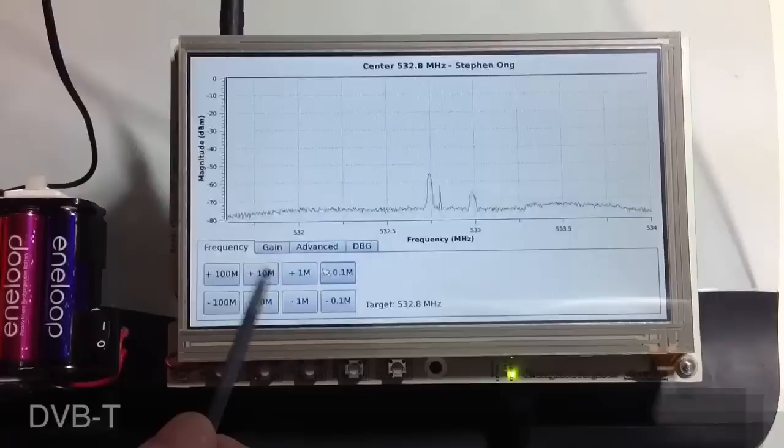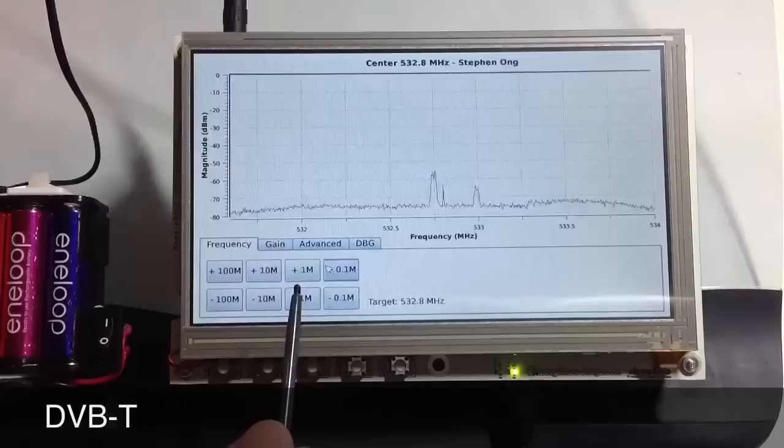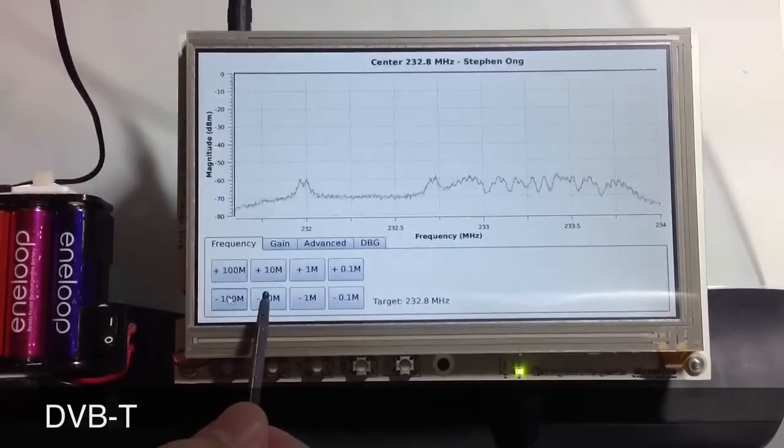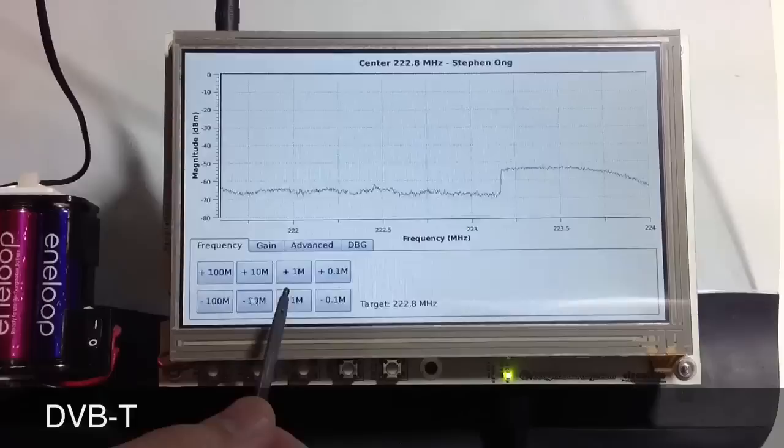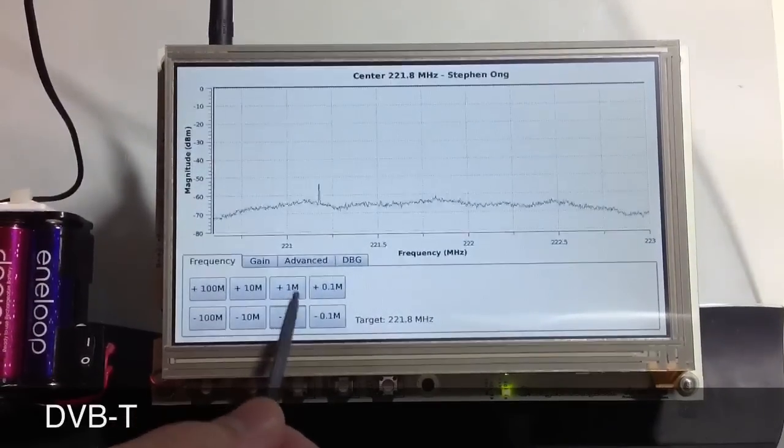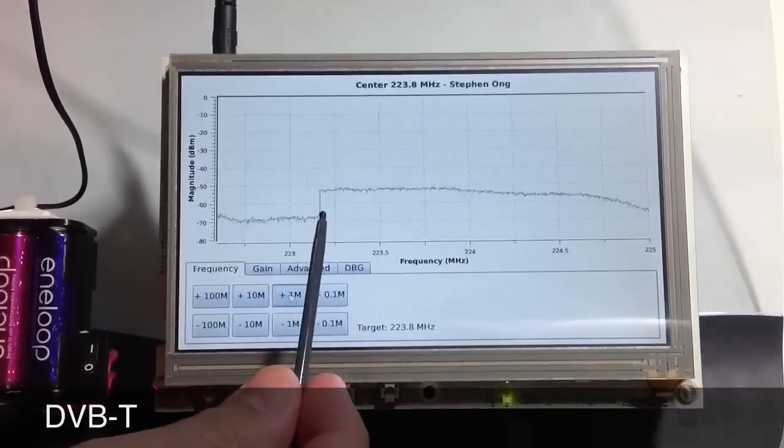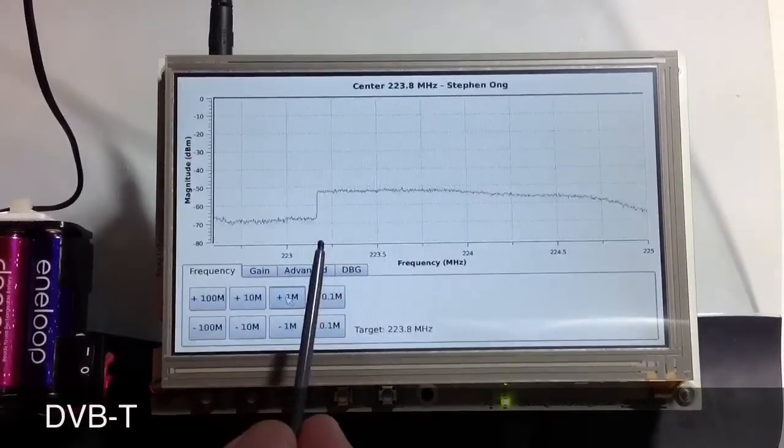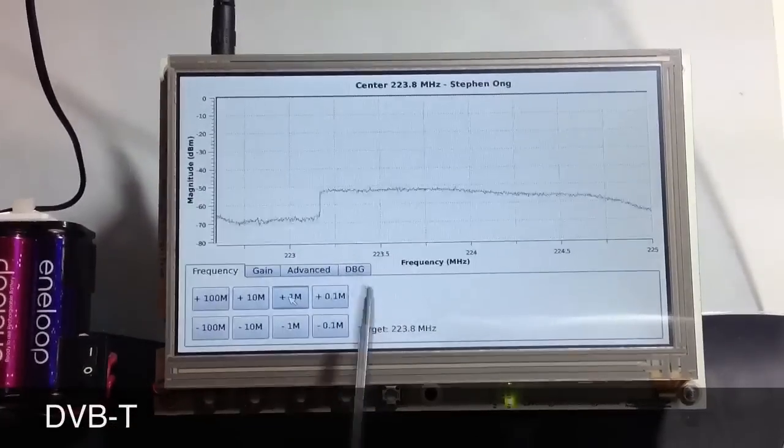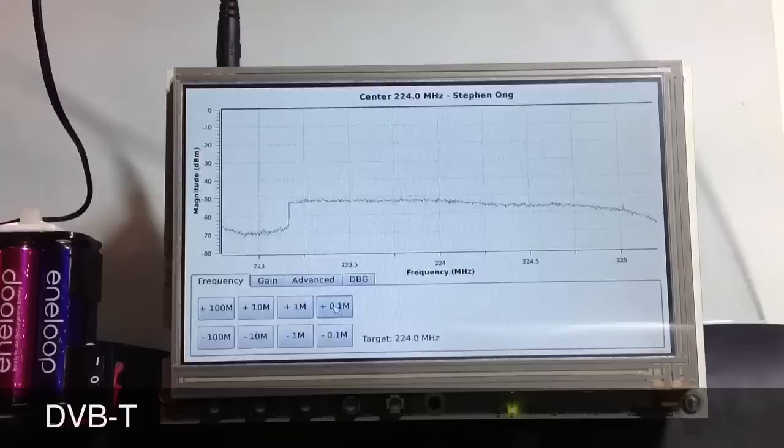Let's compare it with the digital TV broadcast. Okay, here's some ABC digital TV. The spectrum starts at 223 MHz. Obviously the shape is quite different.